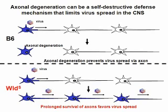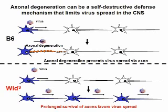This is what most likely happened in Theiler's virus infection. Theiler's virus can spread in the brain using axons. In B6 mice, after virus infection, axonal degeneration occurred in axons and this prevented virus spread to the next neuron. On the other hand, in WLD^S mice, preservation of axons allowed the virus to spread to the next neurons in the brain.